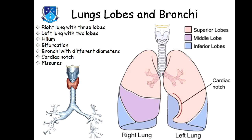The trachea ends on the right bronchus and left bronchus, which enter the lung. The bronchus enters the lung through a structure called the hilum — an invagination on the lung, similar to the hilum of the kidney.